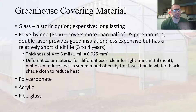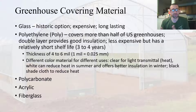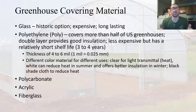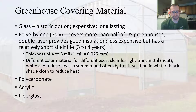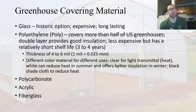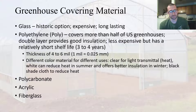Regarding greenhouse covering material — traditionally, your historic option was glass, which is long lasting but expensive to install. Because of that, with the shift toward more common hoop houses, you're seeing more polyethylene covering, or just poly. More than half of UF's greenhouses now utilize poly. It's just plastic sheeting — a double layer provides really good insulation. It's less expensive than glass, but it only lasts about three to four years on average before it needs to be replaced, whereas glass lasts much, much longer. Typically you want a thickness of four to six mil.